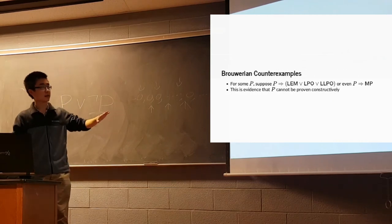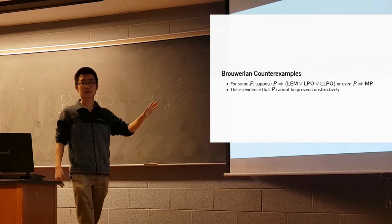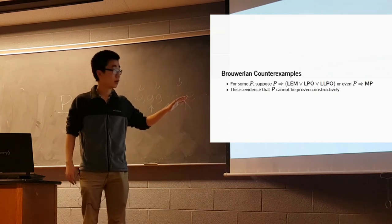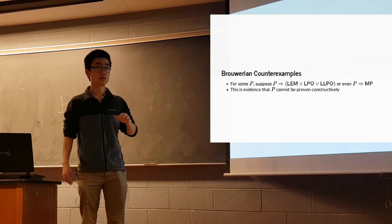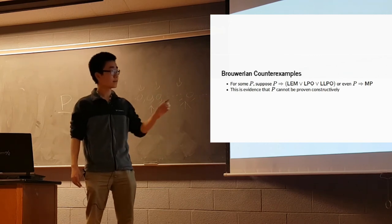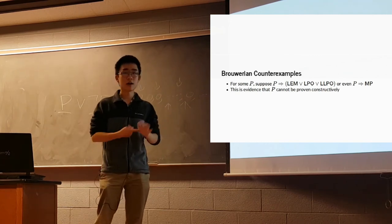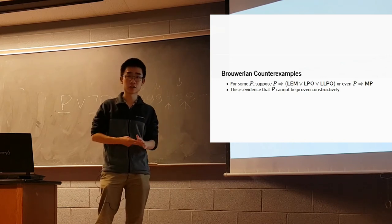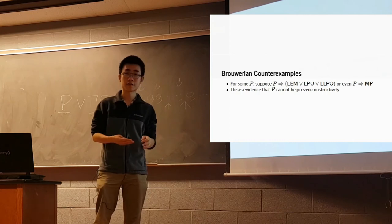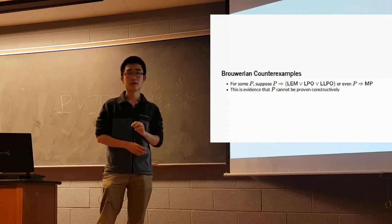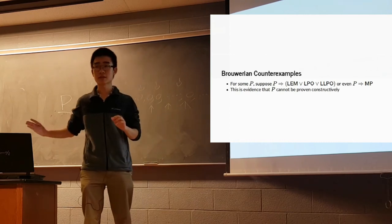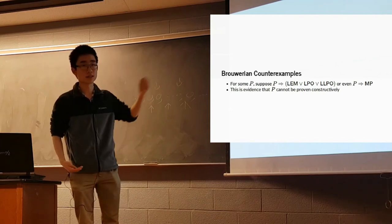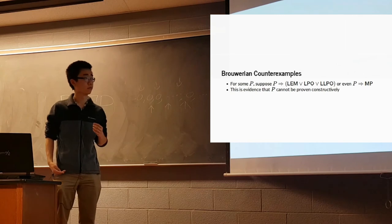The idea behind these principles is that they let us come up with Brouwerian counterexamples. We have some proposition, and we show that if this proposition is true, then the law of the excluded middle holds — or the limited principle of omniscience holds, or the Markov principle holds. If we can show that, it's evidence that the statement cannot be proven within our constructive framework, because it would imply we have some form of omniscience.